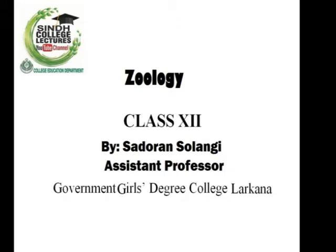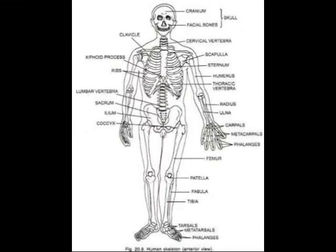Today my topic is Skeleton. Skeleton is a framework of an organism. It gives support to the body and protects our vital and soft organs of the body. There are three types of skeleton: Hydrostatic Skeleton, Exoskeleton, and Endoskeleton.